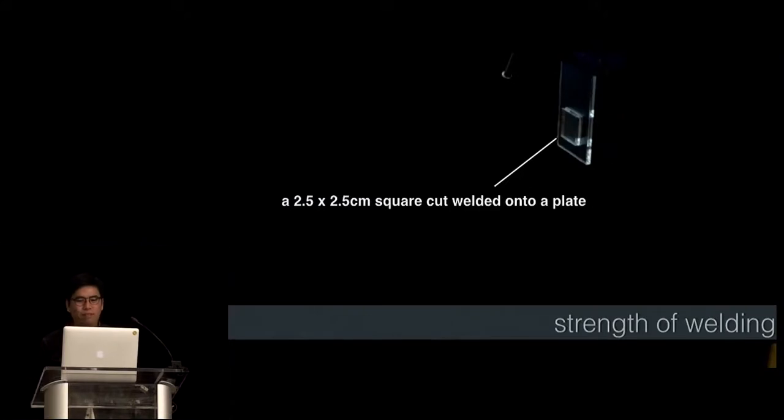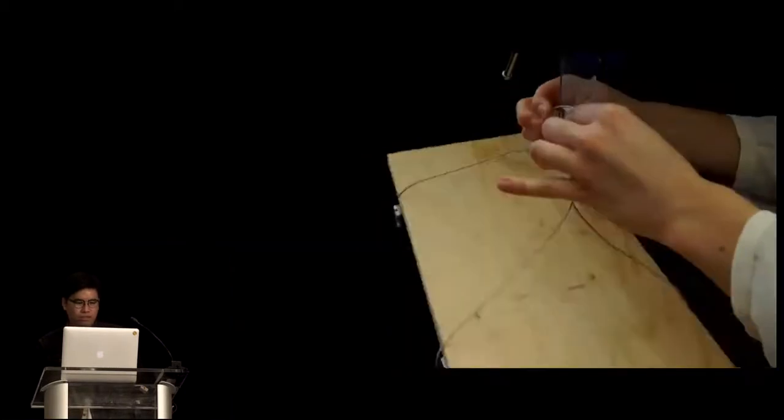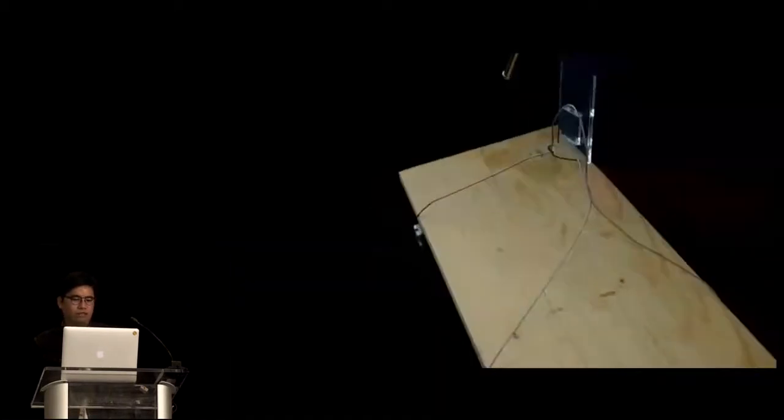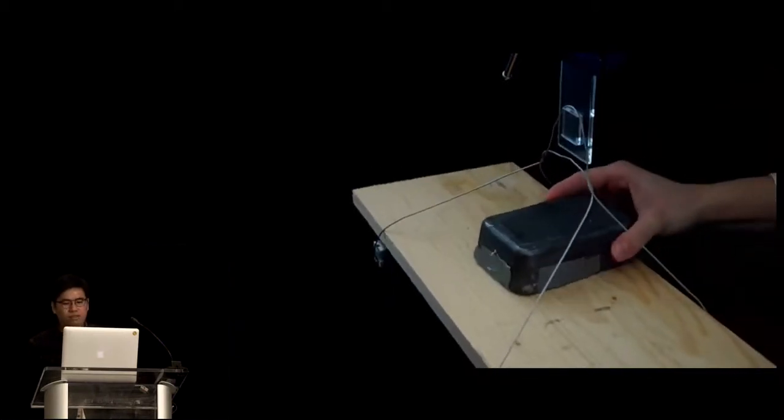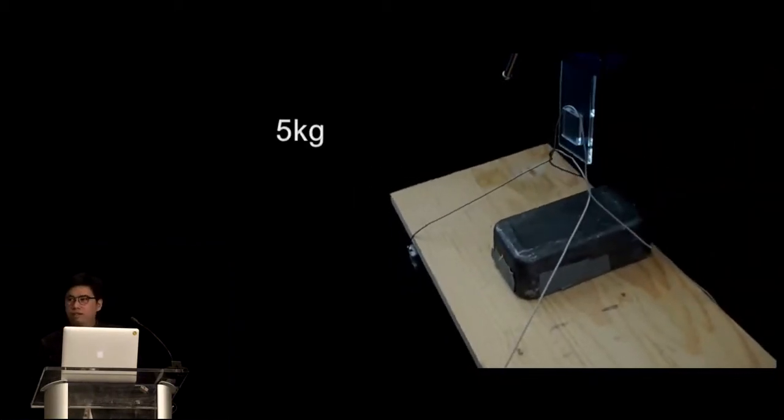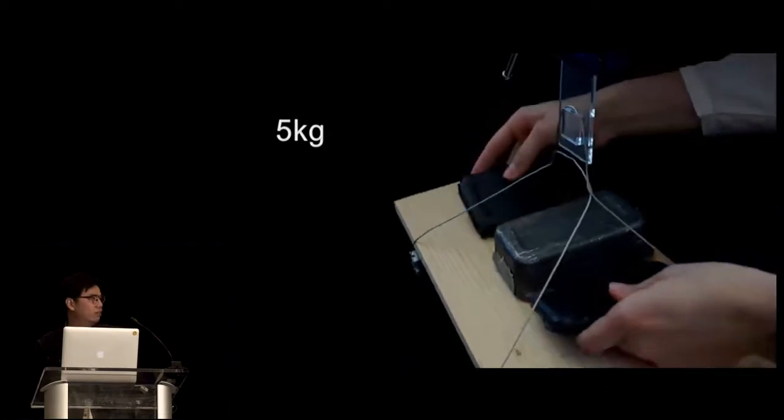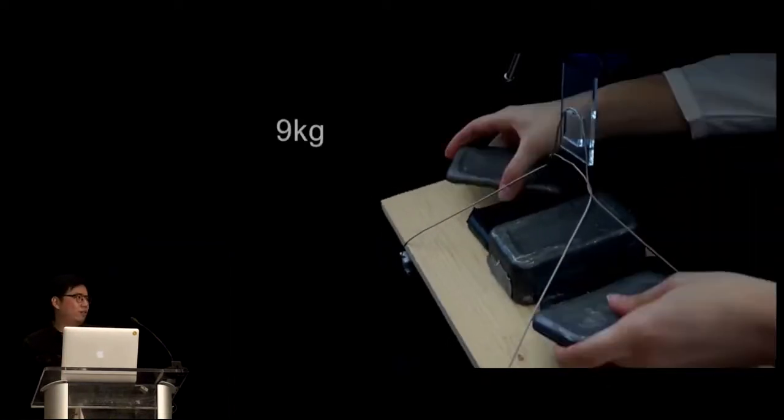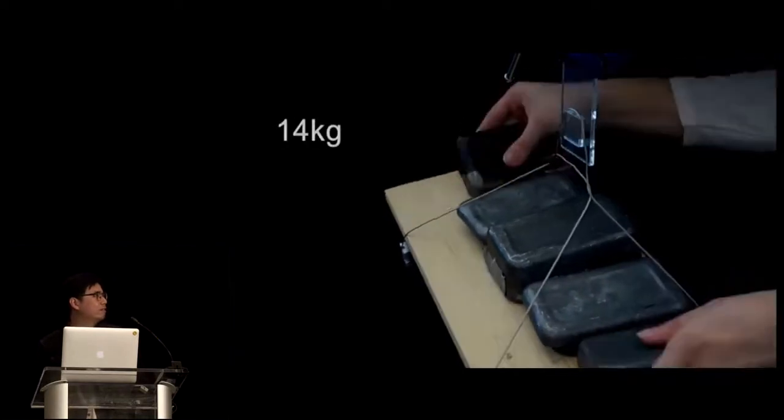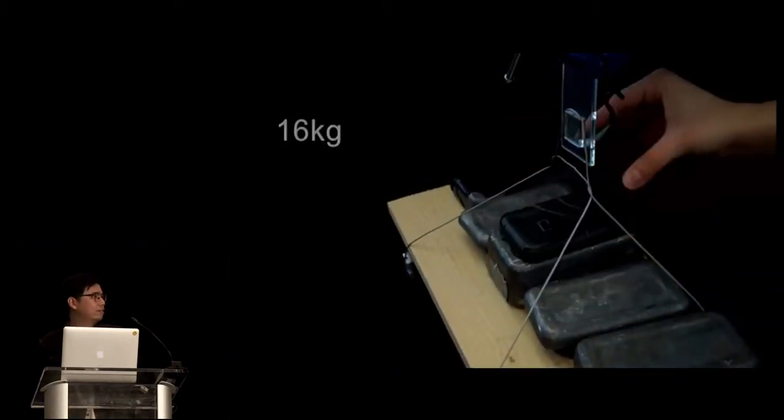Okay. Now, about the strength of the weld. So, here, we try to weld a 2.5 by 2.5 centimeter square cuts and weld that onto a plate. Then, we start putting weights onto it. So, in this experiment, the weld is strong enough to hold more than 15 kilograms. And basically, we just use up all the dummy weights we have. Okay. Pretty strong.